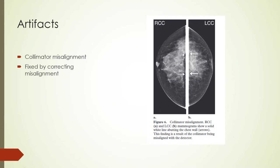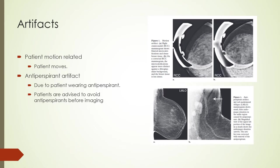Mammography artifacts demonstrate the importance of collimator alignment. A solid white line in the image can result from collimator misalignment with the detector, corrected by realignment. Motion-related artifacts are reduced by using the compression paddle to immobilize the breast; blurred calcifications and apparent density indicate motion, and the corrected image shows calcifications clearly. Antiperspirants can appear in images as objects resembling microcalcifications. Women are reminded not to wear antiperspirants or skin creams before imaging, as these can appear as unusual lesions.